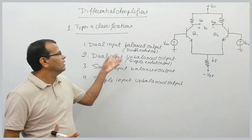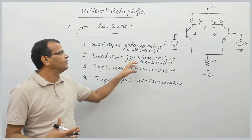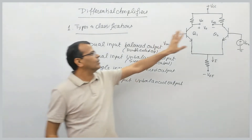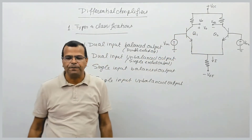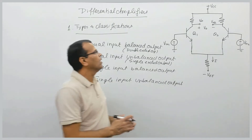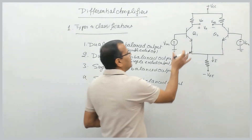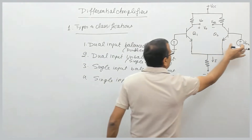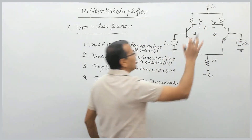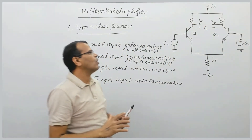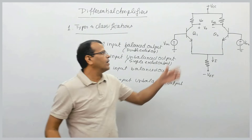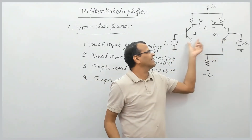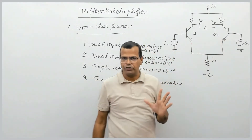So these are the nomenclatures and classifications of the differential amplifier. Looking at the circuit: Vin1 and Vin2 are the two inputs. A differential amplifier consists of two transistors — it can be either BJT or MOSFET.